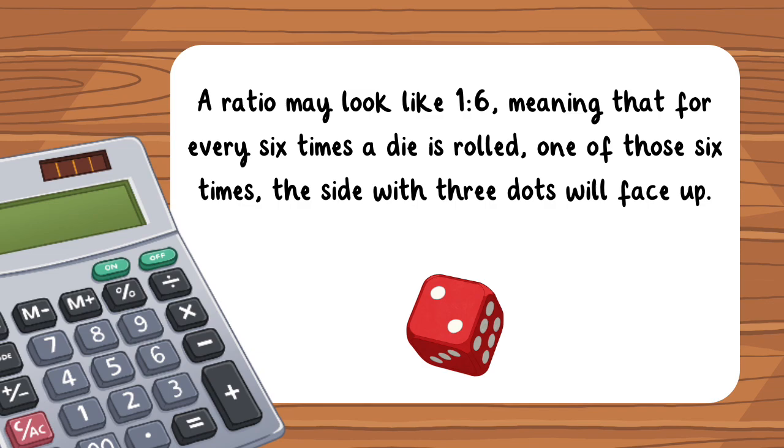A ratio may look like one to six, meaning that for every six times a die is rolled, one of these six times, the side with three dots will face up.